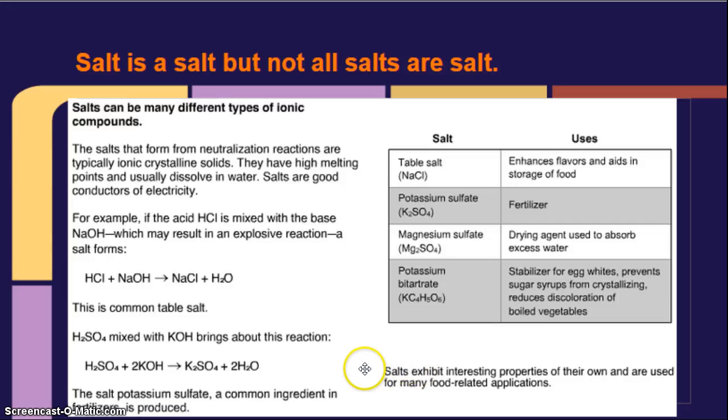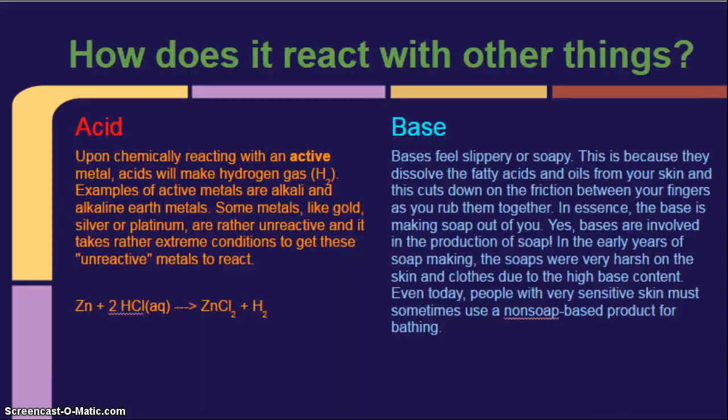The salt potassium sulfate, a common ingredient in fertilizers, is produced. Salts exhibit interesting properties of their own and are used for many food-related applications. Table salt, potassium sulfate is fertilizer, magnesium sulfate is a drying agent used to absorb excess water, and potassium bitartrate is a stabilizer for egg whites, prevents sugar syrups from crystallizing, reduces discoloration of boiled vegetables.